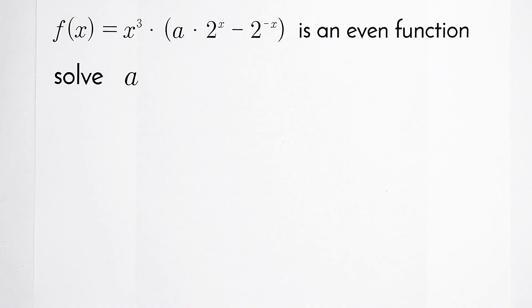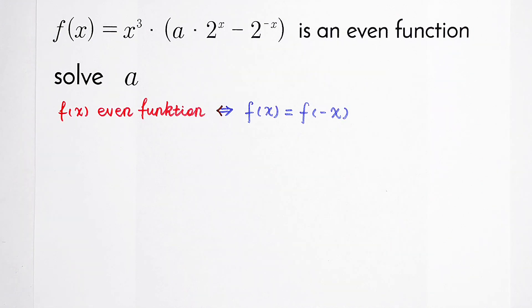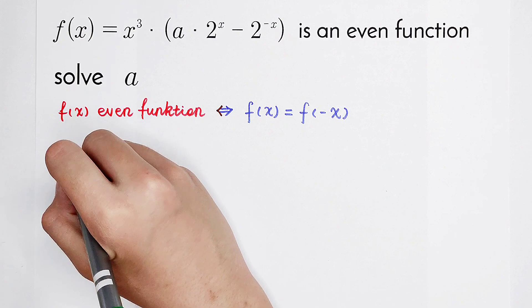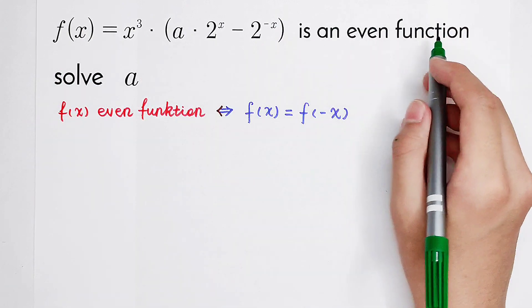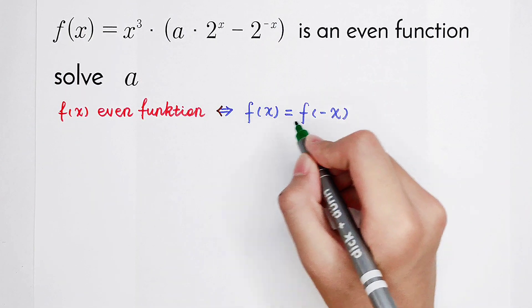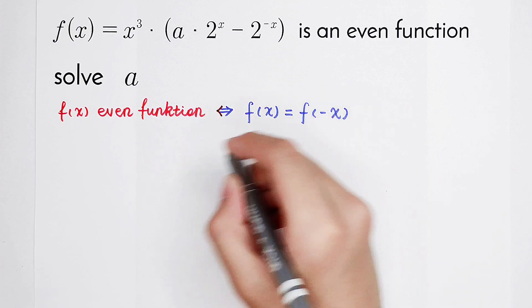This question is very, very easy. If f of x is an even function, then we can use the property that f of x is equal to f of minus x, and then we can solve it. So if f of x is an even function, then f of x is equal to f of minus x.